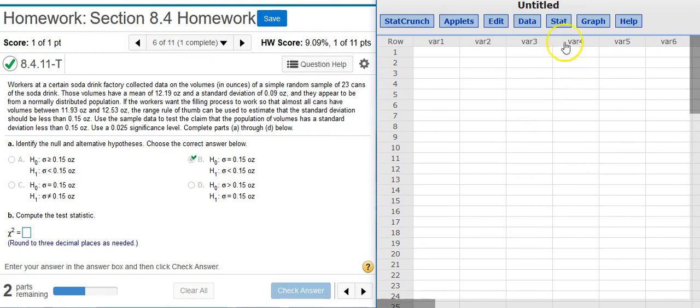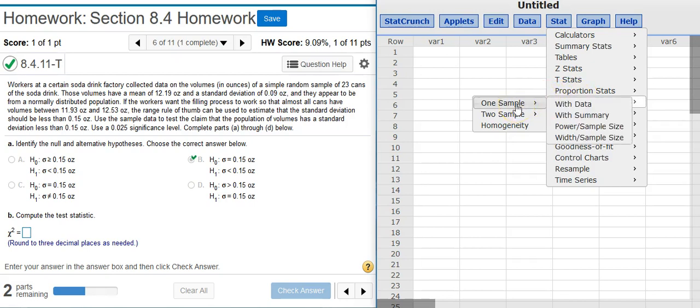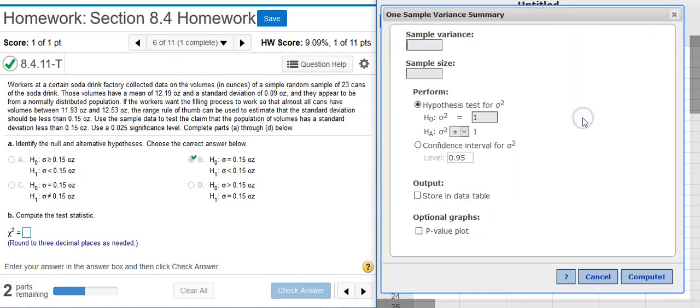Inside StatCrunch, I want to go to Stat, Variance Stats, because this is how we test standard deviations, is through the variance. One sample, because I've got only one sample, with Summary, because I don't have actual data.